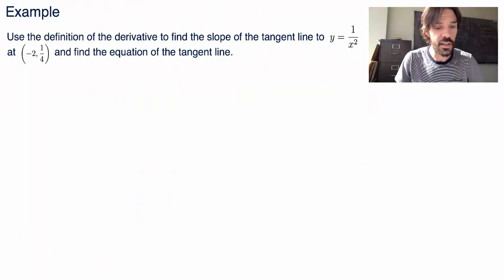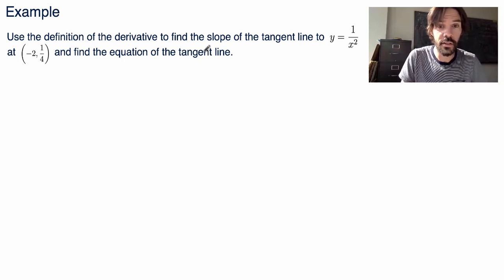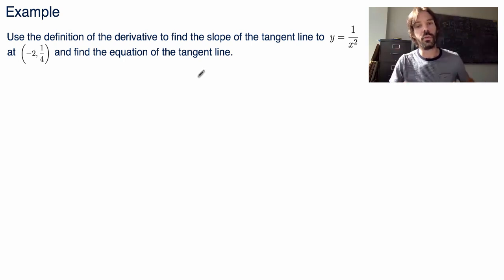So suppose that I ask you to calculate the slope of the tangent line of a given function. In this case I chose the function 1 over x squared at a point, minus 2 and 1 fourth. Of course this point must lie on the function or the curve I'm looking at. And then I ask you to find the equation of the tangent line at this point. So how do we do that?